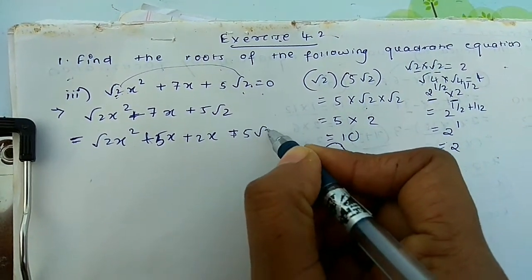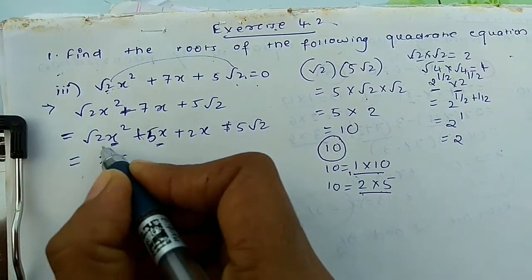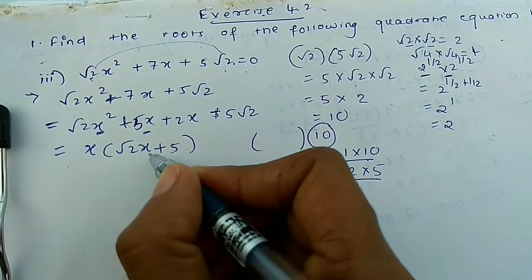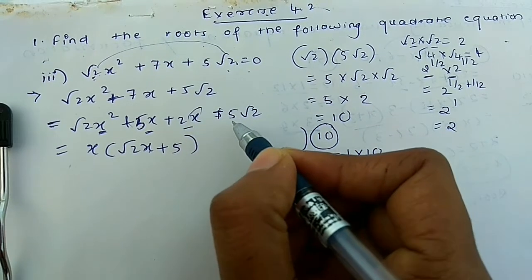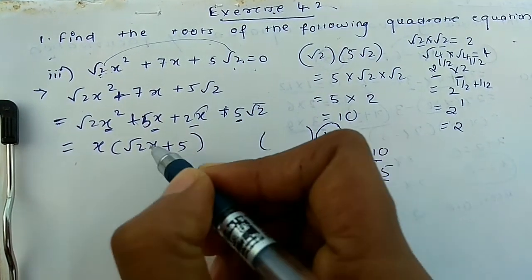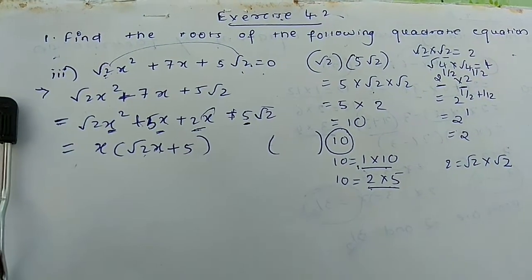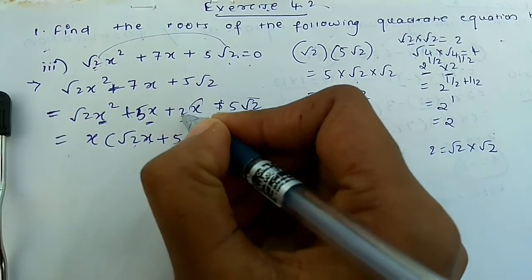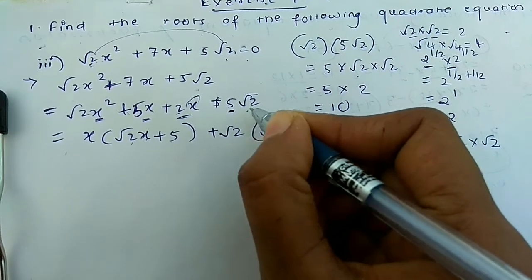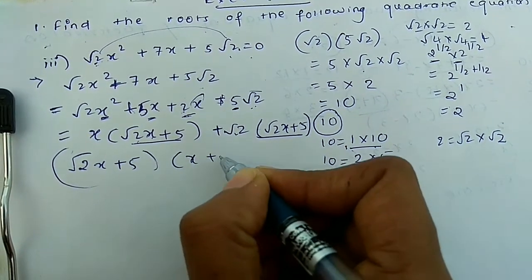Since the middle term has a plus sign, both split terms will have plus sign. We write √2x² + 5x + 2x + 5√2. Here x is common in the first pair, so take x out: x(√2x + 1). In the second pair, we need to get (√2x + 5). Since 2 can be written as √2 into √2, take √2 out: √2(√2x + 5).